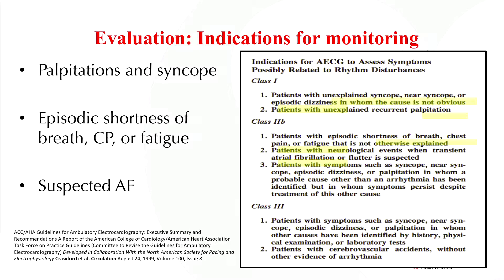Traditionally, ambulatory monitoring has been used for patients with syncope and palpitations, less frequently with patients who have ventricular ectopy or are at risk for sudden cardiac death. It can also be used for episodic shortness of breath, chest pain, or fatigue when it's not otherwise explained. There's been increasing use of outpatient ambulatory monitoring, not only in the detection of, but also in the treatment of atrial fibrillation.